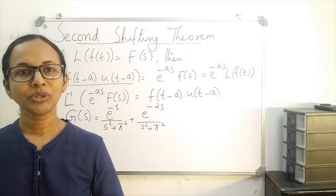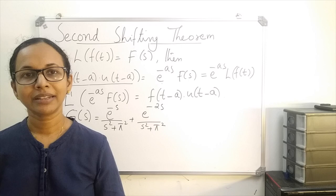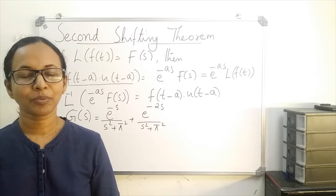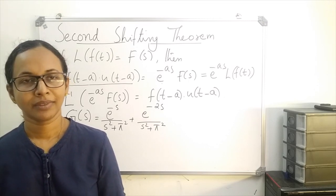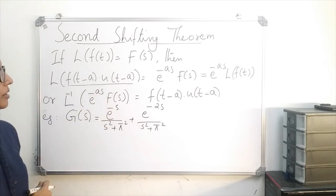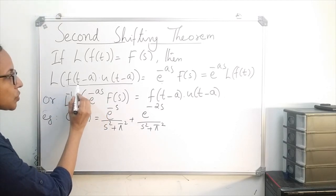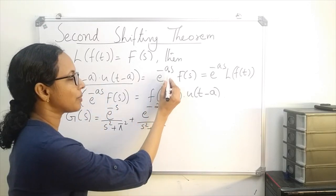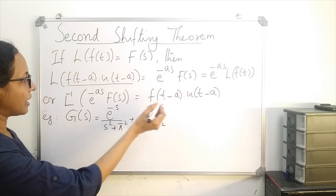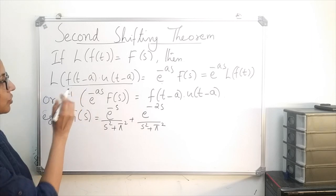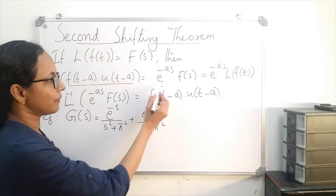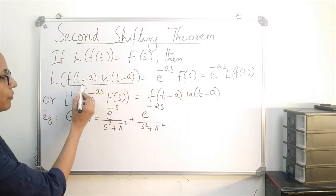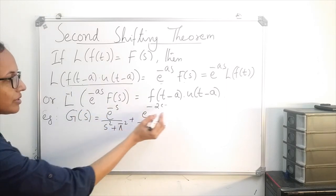I will explain how to use the second shifting theorem for finding the inverse Laplace transform of a function of the form e raised to minus as into f of s. The second shifting theorem states that the Laplace transform of f of t minus a into u of t minus a is equal to e raised to minus as into f of s, where f of s is the Laplace transform of f of t. Therefore, the inverse of e raised to minus as times f of s is f of t minus a into u of t minus a.